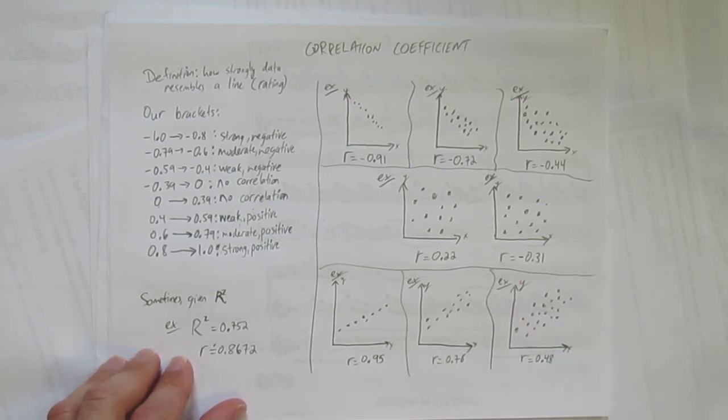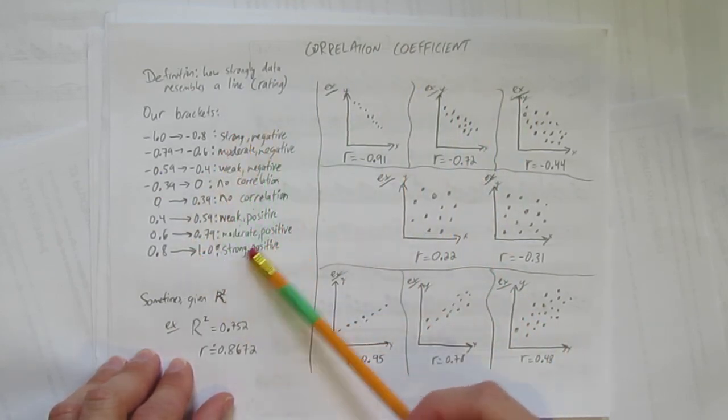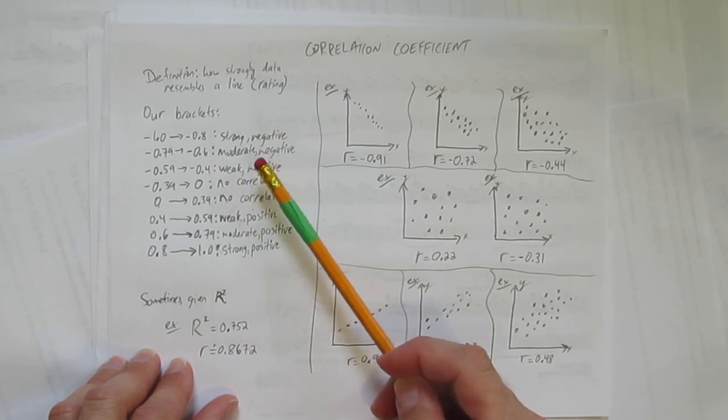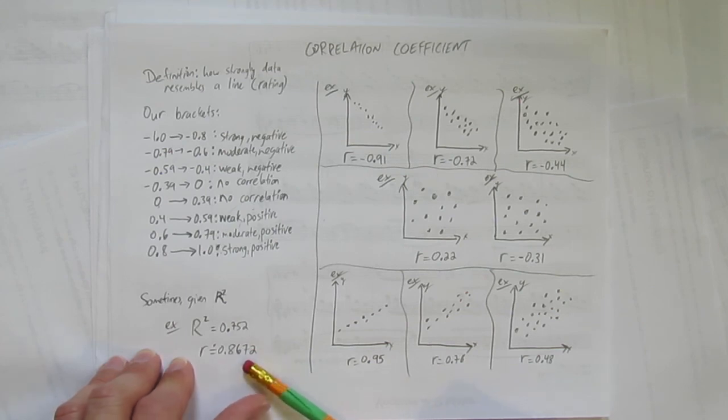And there you have some basics of correlation coefficient: what it is, what numbers we'll use to talk about how strong or weak and negative and positive it is, a reminder when you're doing correlation coefficient using technology, and some examples.